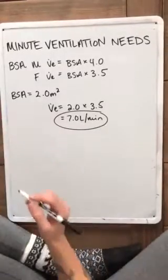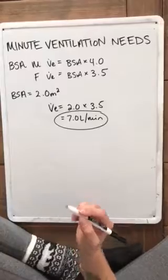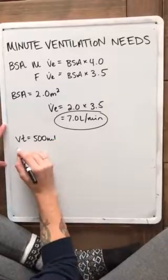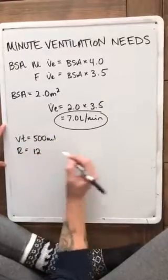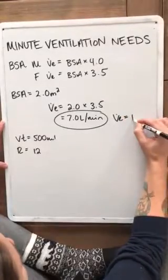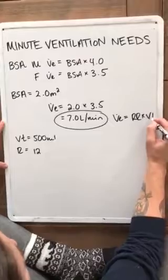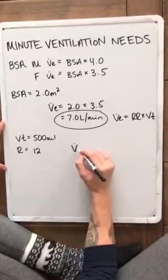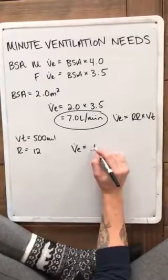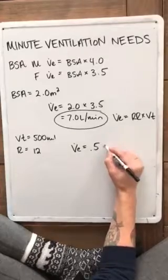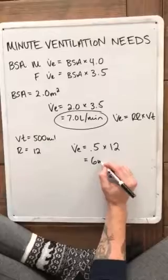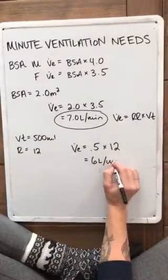Say a doctor orders that we would like a tidal volume of 500 and a rate of 12. We should know by now that our minute ventilation equals our rate times our tidal volume. We'll transcribe that to liters, so 0.5 liters times 12, and that should give us a minute ventilation of 6 liters per minute.